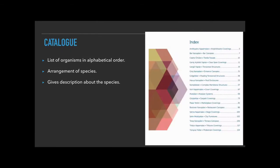Catalog is like an index at the front of a book. It tells you what information is present in the book, how many chapters, what topics are in each chapter. In short, it is a list of organisms in alphabetical order, where everything about that species is described in detail, and you can find it all at a single stretch on that page.